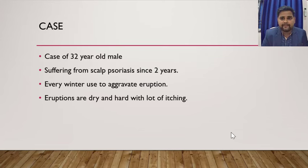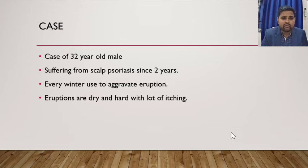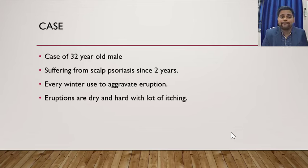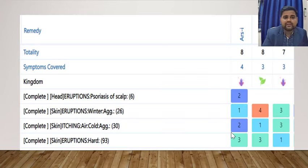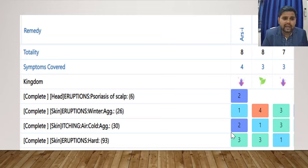We will discuss a brief case: a 32-year-old male suffering from scalp psoriasis for 2 years. Every winter the psoriasis eruptions used to aggravate. Eruptions are dry and hard with lots of itching. The totality I made includes: psoriatic eruption on scalp, aggravation in winter, itching aggravated by cold air, and hard eruptions.